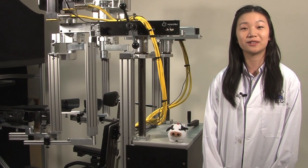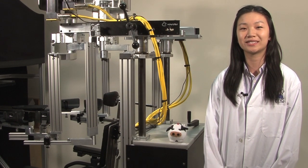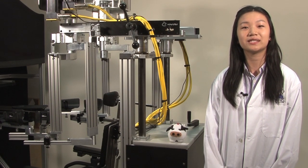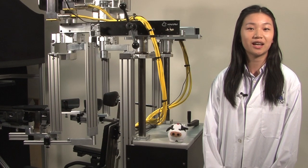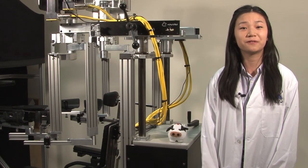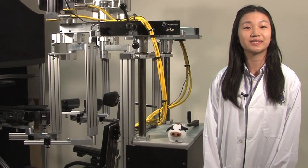My project this summer involves studying proprioception using a kinarm robot. Proprioception is the body's ability to perceive the position and movement of our limbs in space. It is important for executing coordinated movements such as reaching.